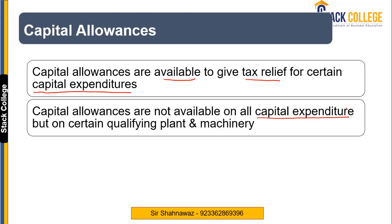Capital allowances are only available on certain qualifying plant and machinery. If plant and machinery falls under the definition of qualifying plant and machinery, then you are eligible to get the capital allowances.